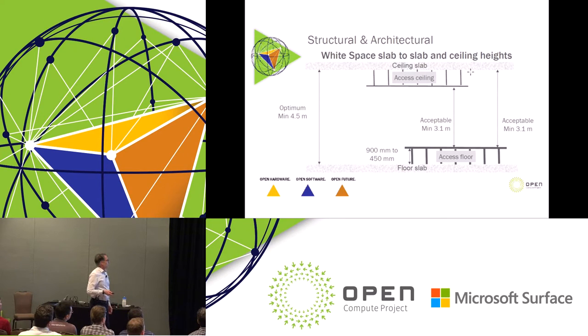Another subsystem that we've considered is the structural and architectural aspects of the white space. Within the checklist we've also given some guidance around what we think would be an optimum arrangement, not an absolute must-have for it to work. If the facility allowed for it, then a 4.5 meter slab-to-slab height would be an optimum clearance to have, but it would still work at 3.1 meters.